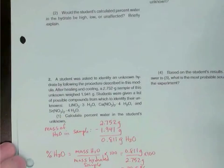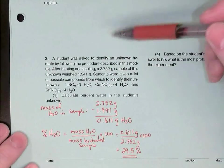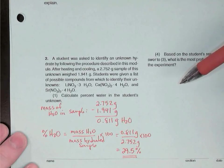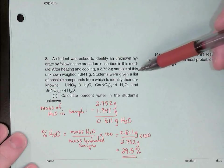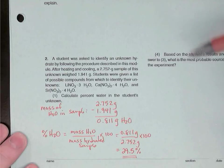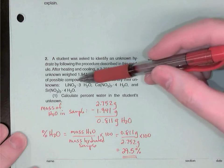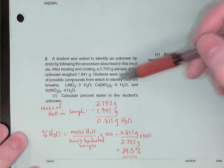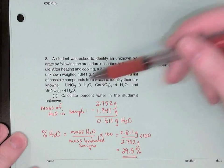First of all, back in question number two, part one, we were given some information about a student trying to identify an unknown hydrate using the same procedure that we followed. We're told that they heated a 2.752 gram sample of the hydrated salt and then after heating it weighed 1.941 grams. We're told the student has three possible choices for their hydrate. It could be lithium nitrate trihydrate, calcium nitrate tetrahydrate, or strontium nitrate tetrahydrate.